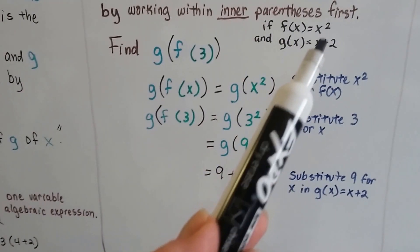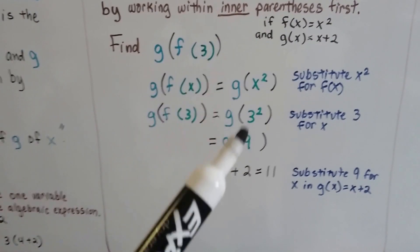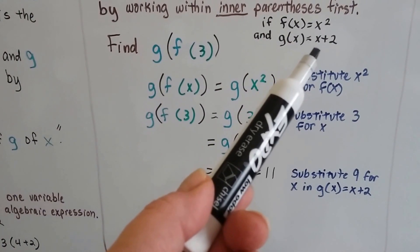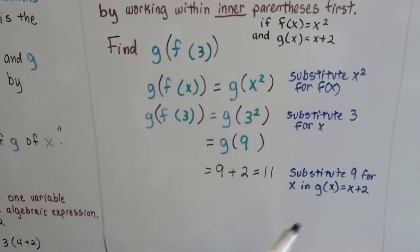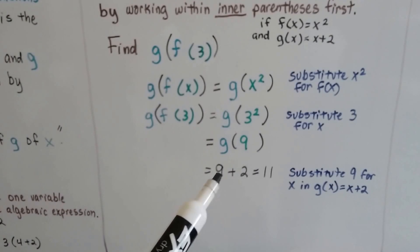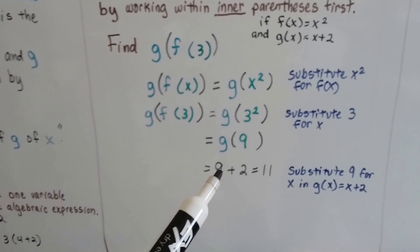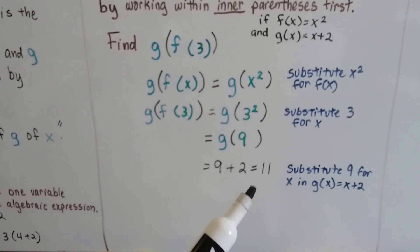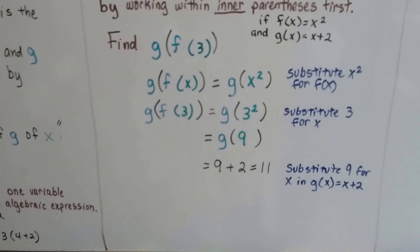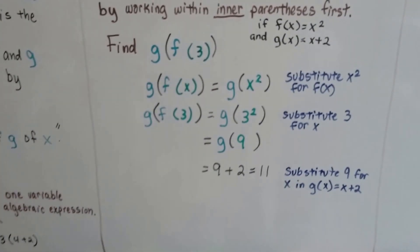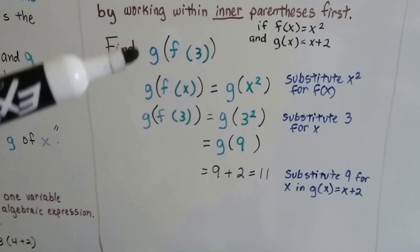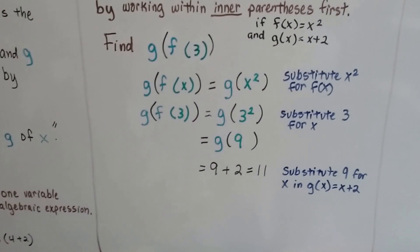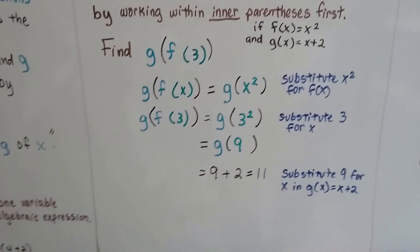Now we've got g of f of 3 equals, so this is going to equal 3 squared. Because we're substituting that 3 in for the x. It said f of x equals x squared. Well, if the x is a 3, then we have 3 squared. So that's going to be 9. And remember, g is x plus 2. g of x is x plus 2. So now we just take that 9 and the 9 is the x, and we add 2 to it and we get 11. We substitute the 9 for the x in the g of x equals x plus 2. I know it sounds confusing, but if you follow it step by step, you'll see how the substitution just went in place of these values and we found that amount.